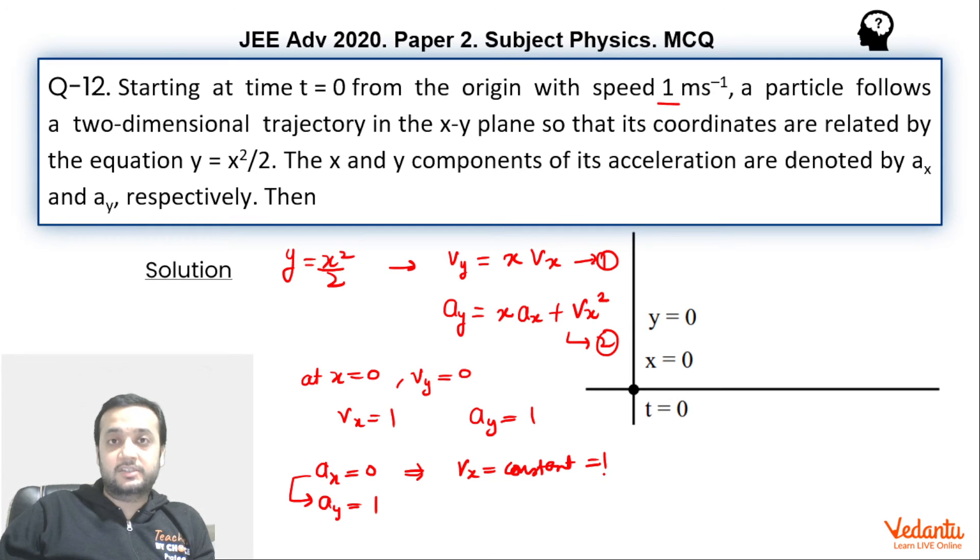Since ax is 0 implies velocity in x must have become constant, which is 1 meter per second. So we can say that at t equals to 1, particle must have reached x equals to 1 because its velocity is constant and it is moving at 1 meter per second. So at t equals to 1, x is 1.